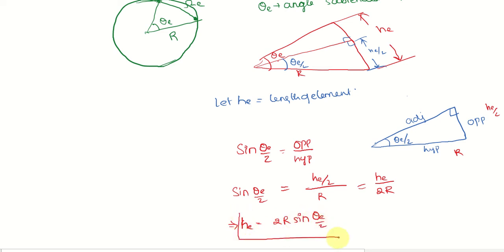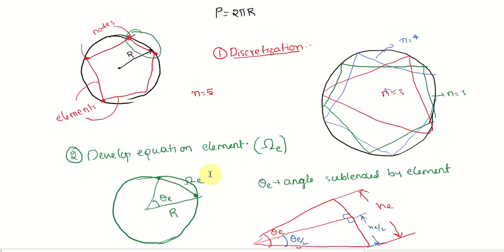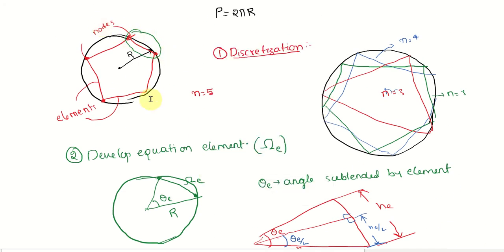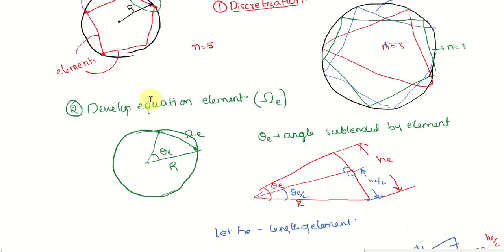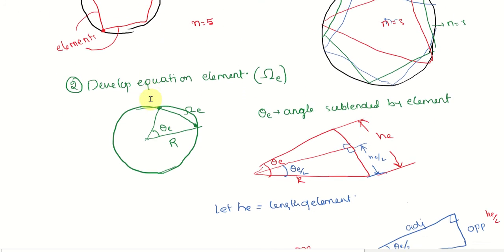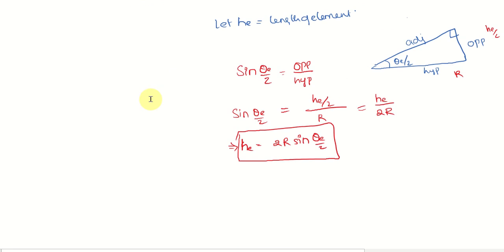That is the second step — we have developed the equation for a single element. The property we needed was the element length, and we have found it. So, step one is discretization, step two is developing the equation for a single element, and step three is to assemble the equations.